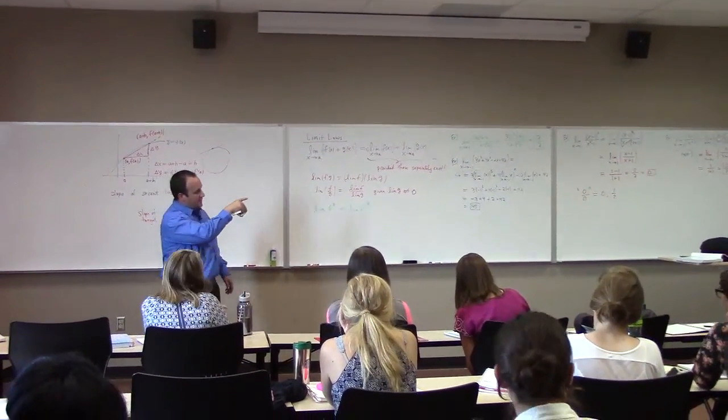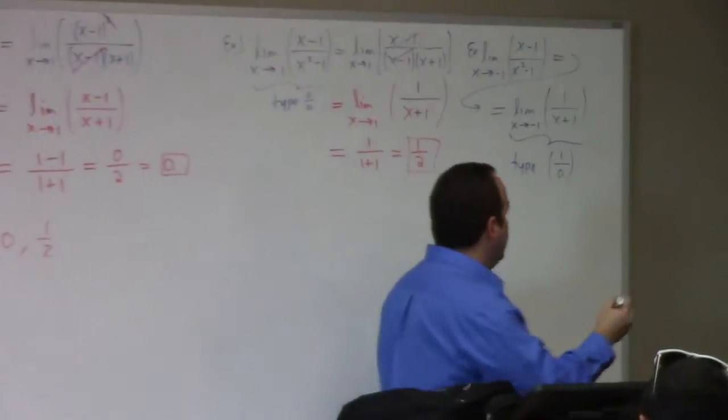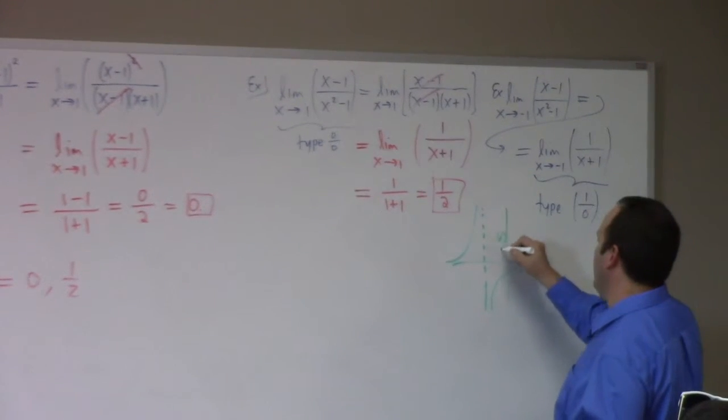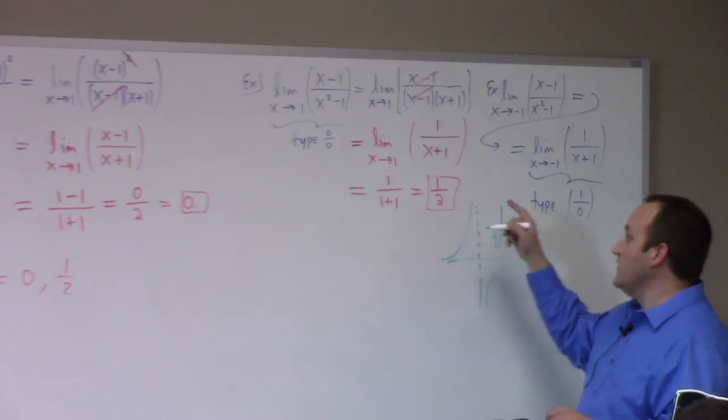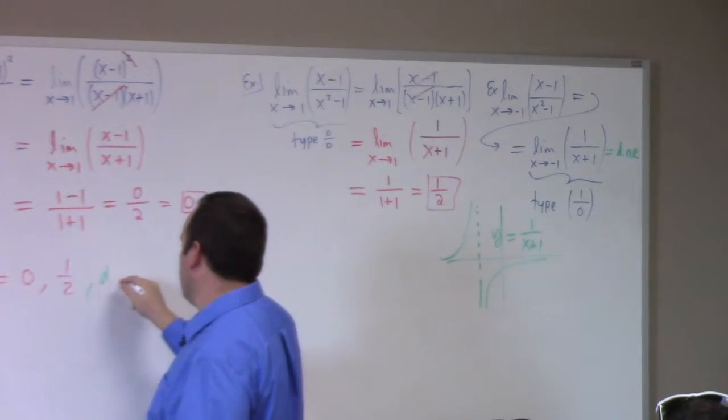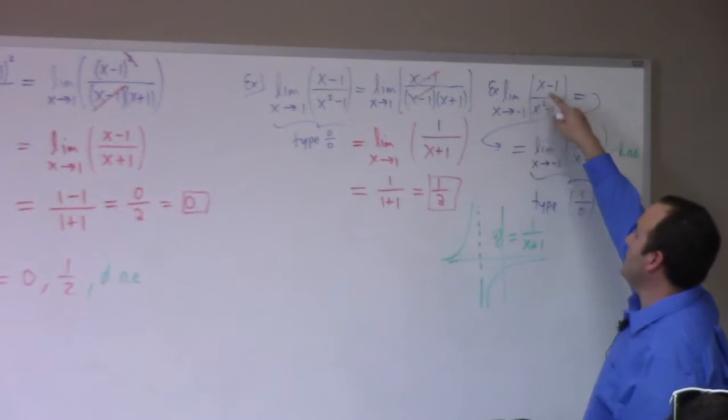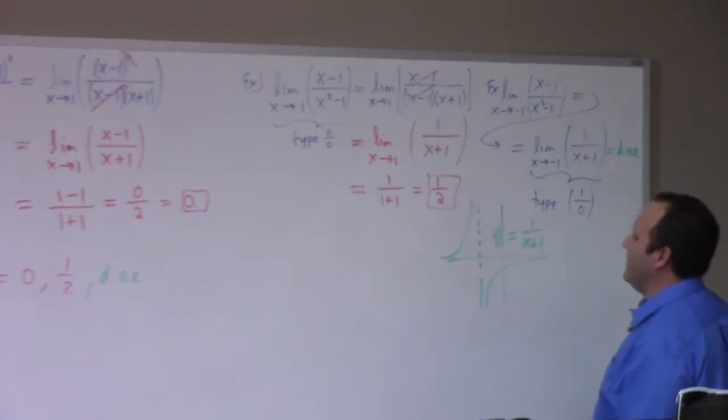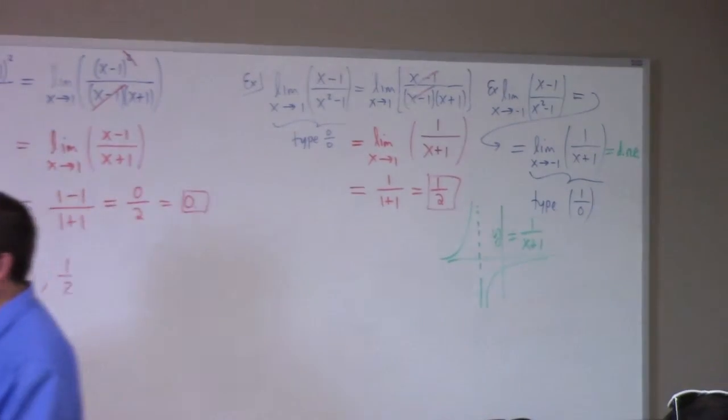Let us work some more examples. So my point there was there is a type zero over zero to start with. This limit does not exist because graphically one over x plus one looks like this. That's the graph of y equals one over x plus one. It goes to minus infinity from the right, it goes to plus infinity from the left, so this limit actually is a non-existent limit. So we'd have to add to this list does not exist as a possible value for zero over zero.